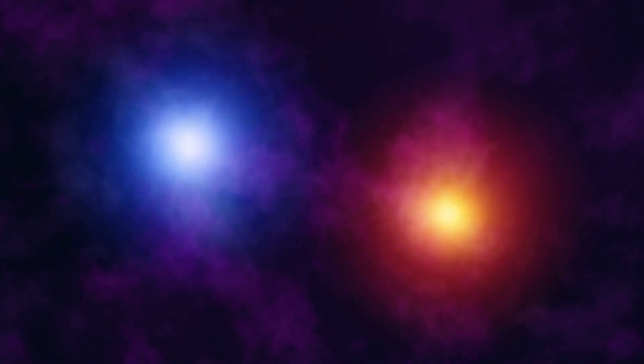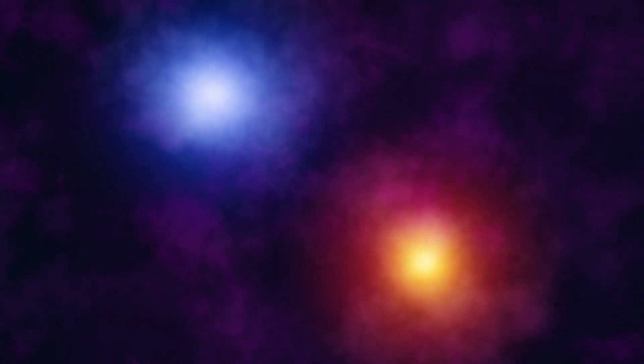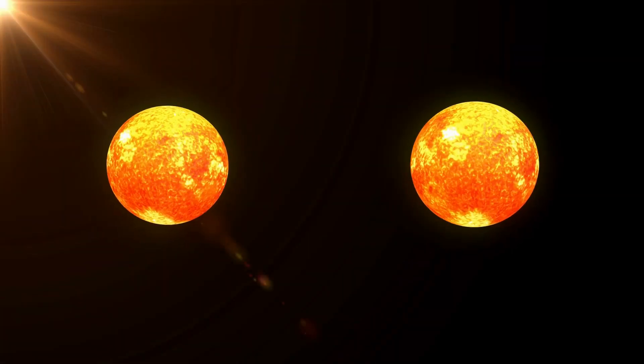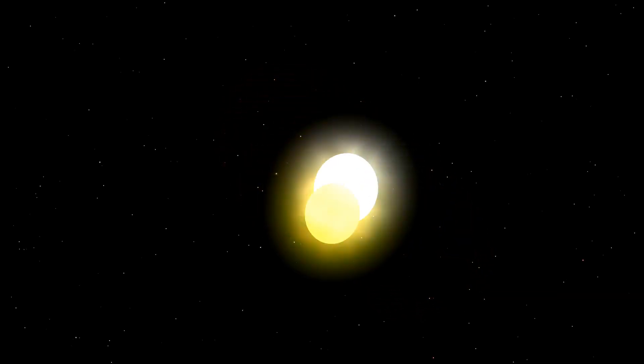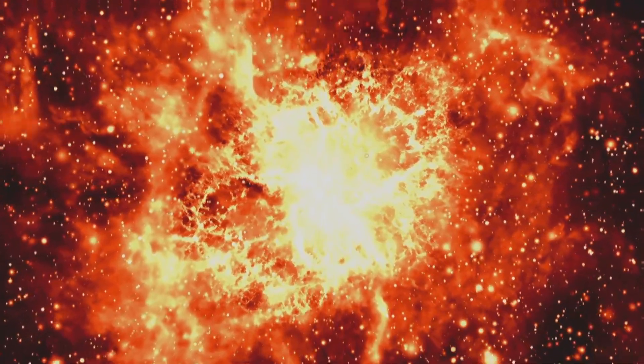Lurking in binary star systems, these cosmic parasites gravitate towards their larger companions. Slowly, they begin to feed. They siphon off hydrogen, growing larger and hotter. The vampire star may erupt in a brilliant nova explosion.